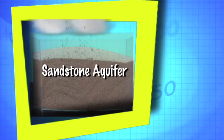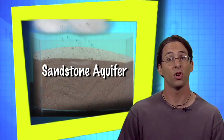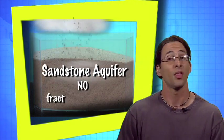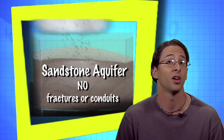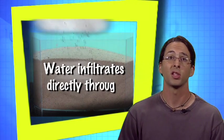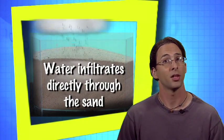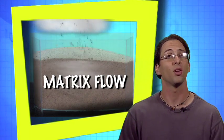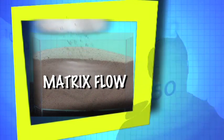In our sandstone aquifer, the water could not move through conduits. There aren't any conduits in sandstone aquifers. Water infiltrated directly through the matrix — the sand. This is called matrix flow.